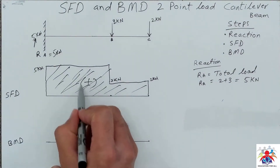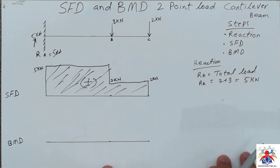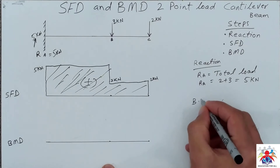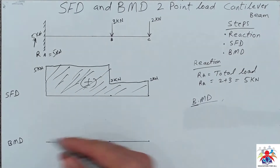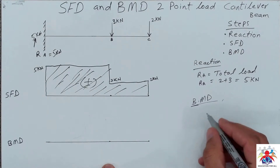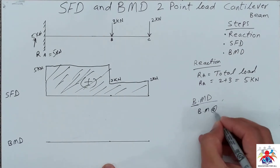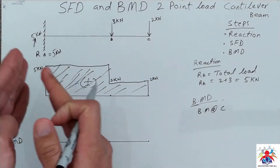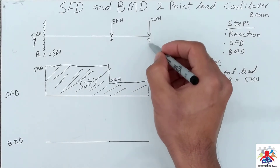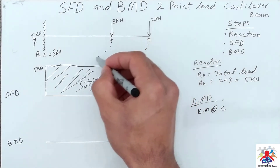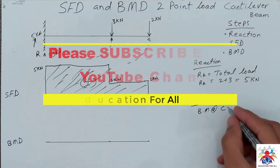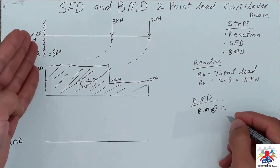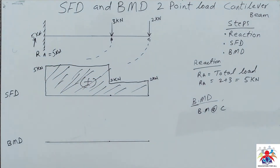This is obviously a positive zone. In order to draw the bending moment diagram we have to calculate the bending moment at each point. Bending moment at point C — we calculate bending moment from right to left because the forces are acting downward and they're trying to bend our beam anticlockwise.